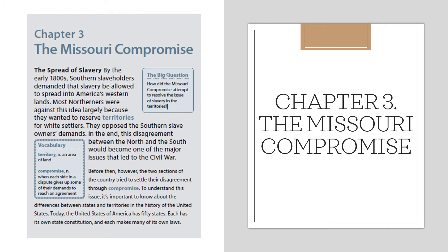Chapter three: The Missouri Compromise — The Spread of Slavery. By the early 1800s, southern slaveholders demanded that slavery be allowed to spread into America's western lands. Most northerners were against this idea, largely because they wanted to reserve territories for white settlers. They opposed the southern slaveholders' demands. In the end, this disagreement between the north and the south would become one of the major issues that led to the Civil War. Remember, a territory is an area of land.